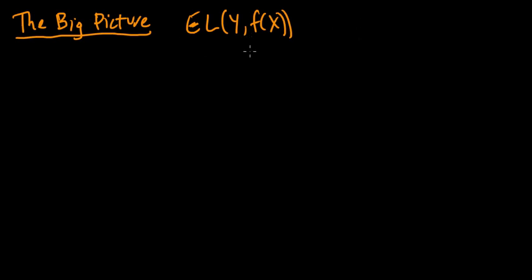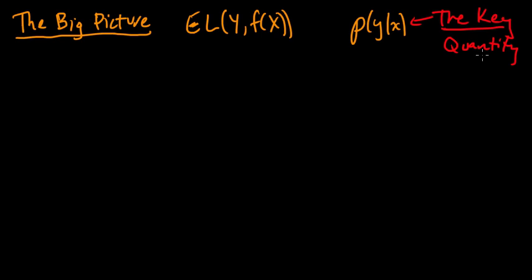So remember that when we were trying to solve this, we observed that the conditional distribution of y given x was the key quantity. This was the key quantity that we needed to solve this minimization problem. And if we knew this, it became a problem that we could solve in principle. We definitely needed to know this.